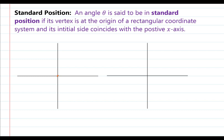I'm going to draw two angles. In the first coordinate plane, I'm going to put the vertex on the origin. The initial side will coincide with the positive x-axis, and I'm going to put the terminal side in quadrant one. I'll make this angle go in the counterclockwise direction, which means that angle theta is positive. For the second angle, the vertex is still on the origin, the initial side is still coinciding with the positive x-axis, but I'm going to make the terminal side in quadrant three. I'm going to draw the curved arrow going in the clockwise direction, and in this case that indicates that theta is negative.